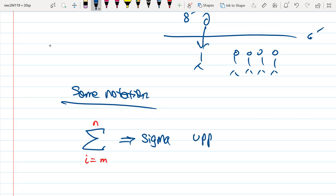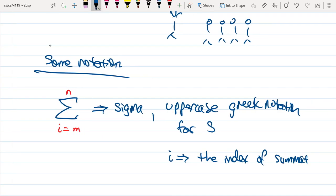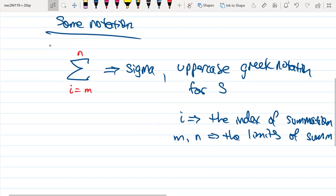And this sigma is the uppercase Greek notation for S. There's also a lowercase sigma. That lowercase sigma looks something like this. And we'll use that for standard deviation. The i that we're looking at here is called the index of summation. And the integers m and n represent the limits of summation.